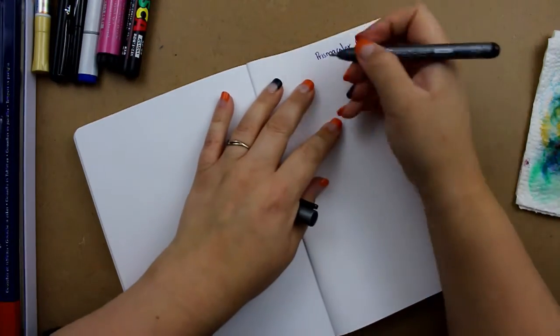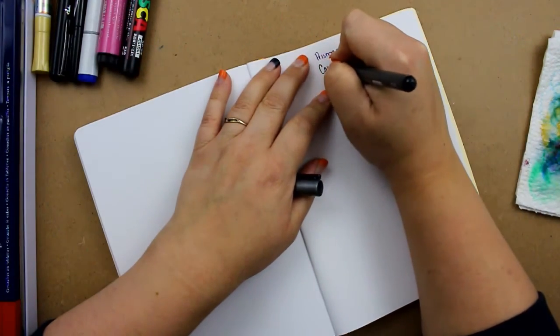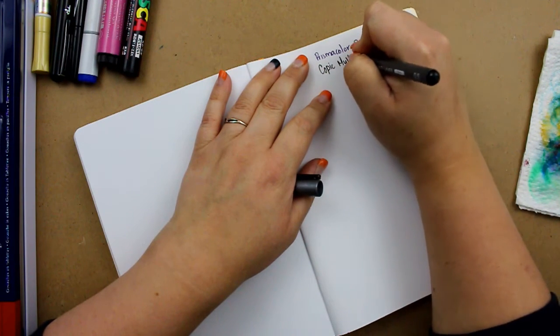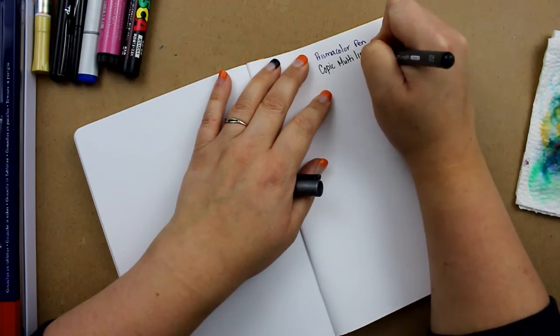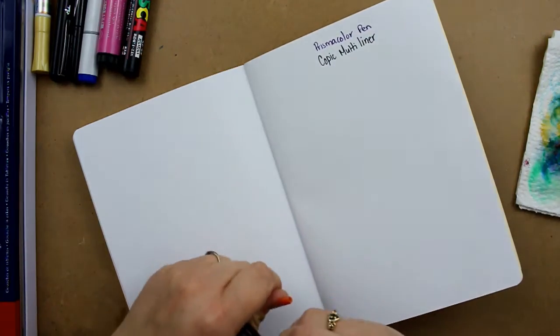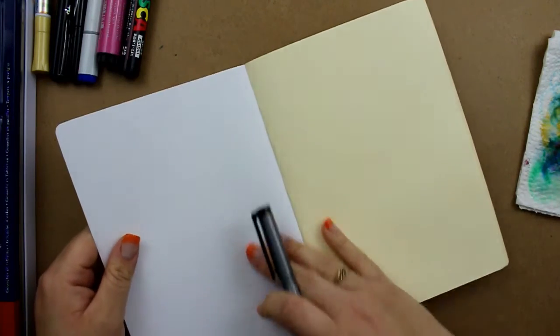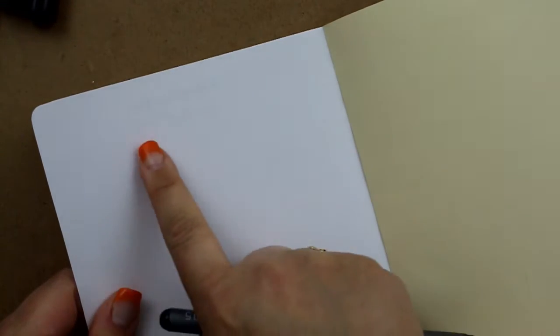Now this is a Copic multi-liner. Sorry guys, I can't write and talk at the same time. So we're going to see if this is going to go through. I'm going to zoom this in just slightly here if I can. So again, it shows through slightly on the back, but it's not really bleeding through the paper.